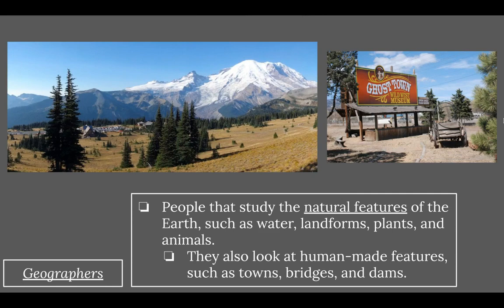The next job would be geographers. Geographers are people that study the natural features of the earth, such as water, landforms, plants, and animals. But they also look at human-made features like towns, bridges, and dams. They would study things like mountains and foothills — whatever natural formations are in a given area.